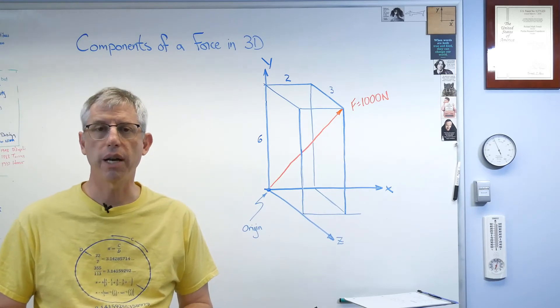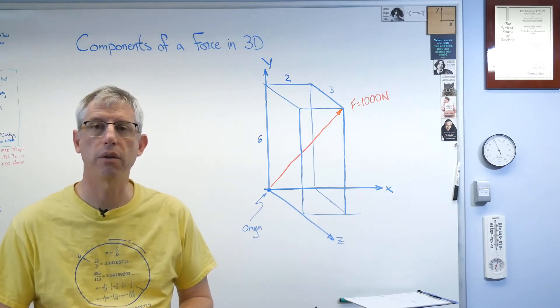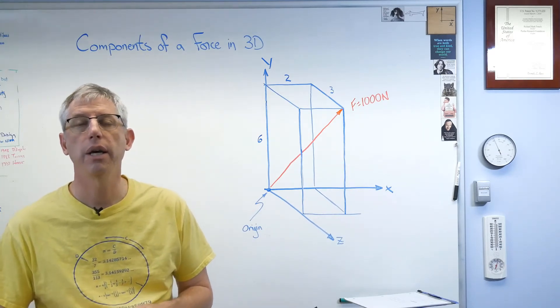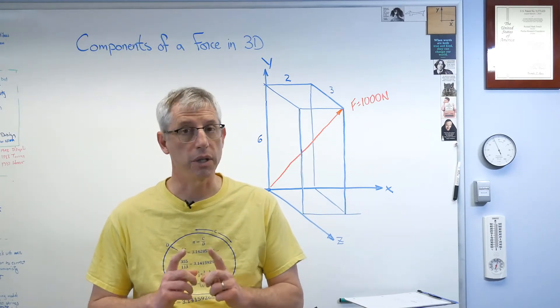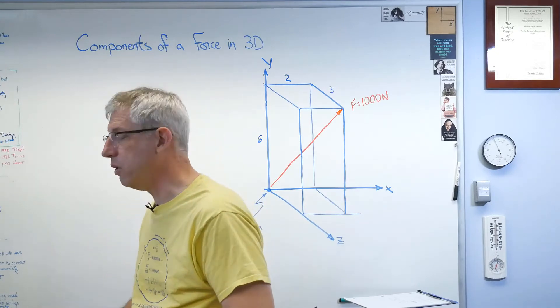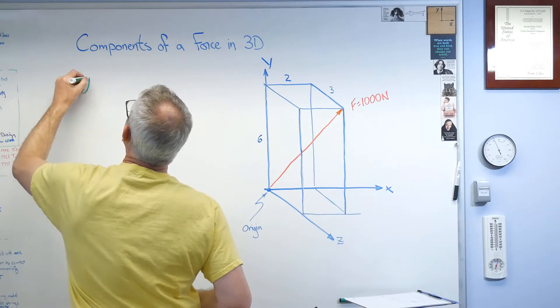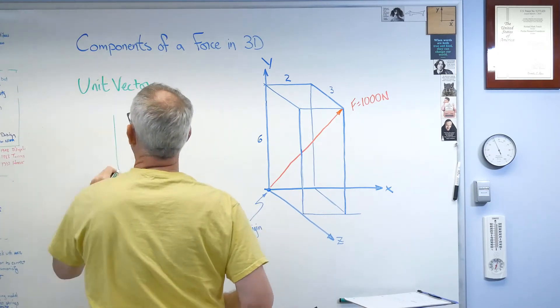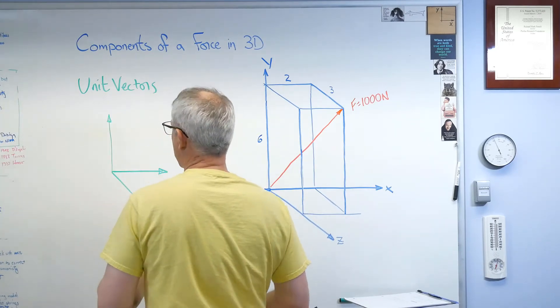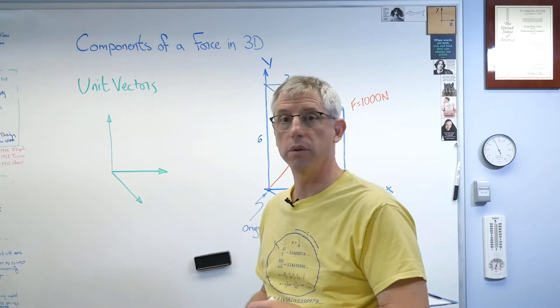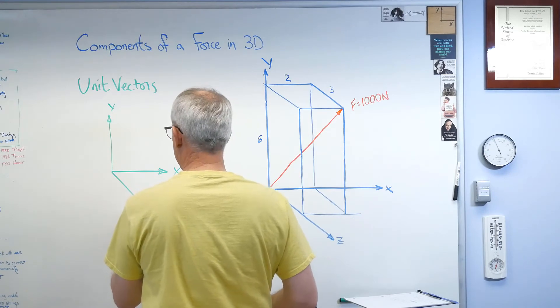Now the unit vector is kind of a weird thing when you first look at it. It has a unit length, that means it has a length of one, but it has a direction. So if you multiply a scalar by a unit vector, all you did was gave it a direction. It didn't change its magnitude. Here's what the unit vectors look like. Let's maybe do this in green here. So unit vectors.